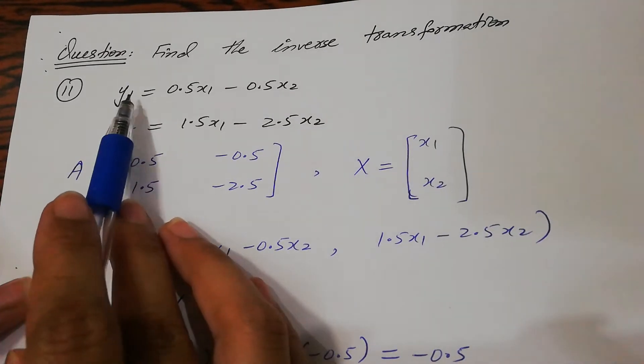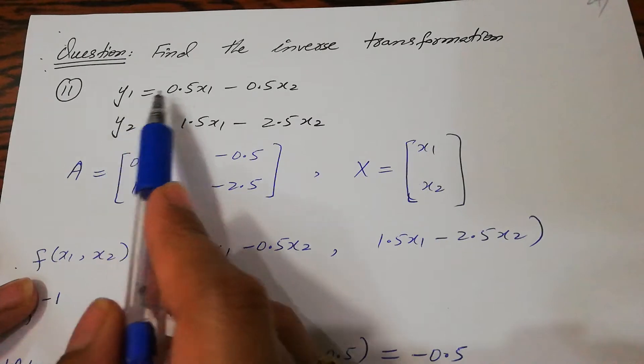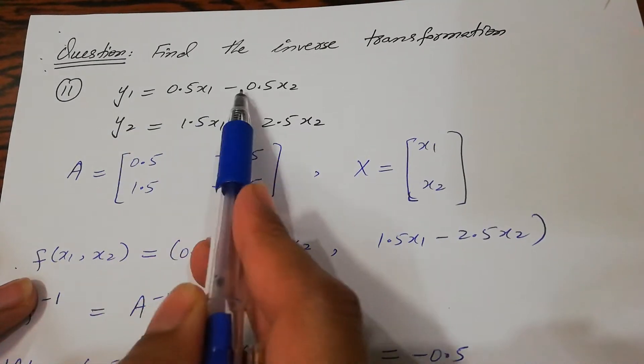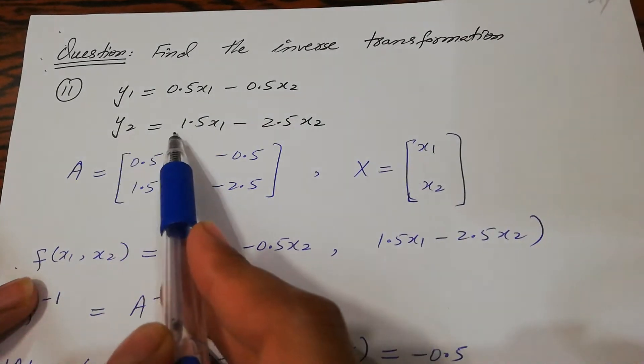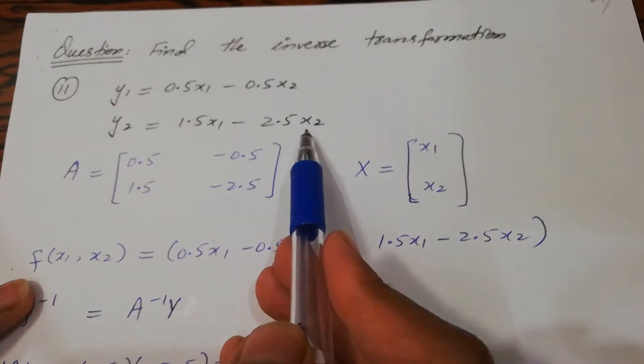You are given a set of equations: y1 is 0.5x1 minus 0.5x2, and y2 is 1.5x1 minus 2.5x2.